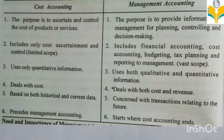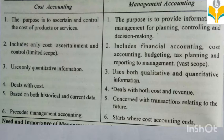Second: cost accounting includes only cost ascertainment and control — it has a limited scope. Management accounting includes financial accounting, cost accounting, budgeting, tax planning, and reporting to management — it has a vast or wide scope. Third: cost accounting uses only quantitative information, while management accounting uses both qualitative and quantitative information.